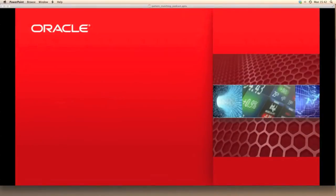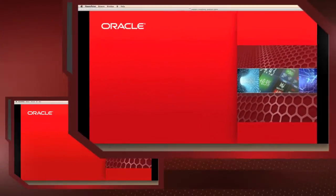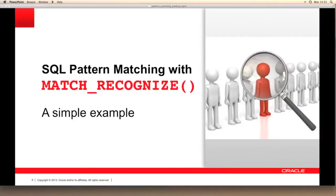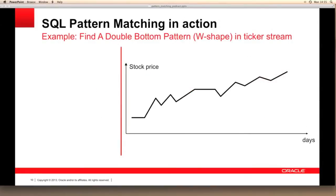The following slides will provide more information about this new feature, Match Recognize, which is part of Oracle database 12c. Let's start with a simple example based on a data set for a ticker stream where we have stock price over time, in this case for each day. Within the data set we want to look for W-shaped patterns where the price goes down then up then down and finally up again.